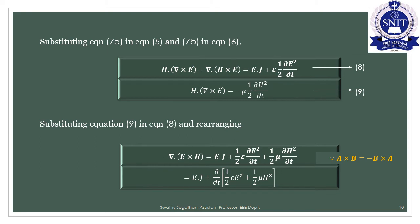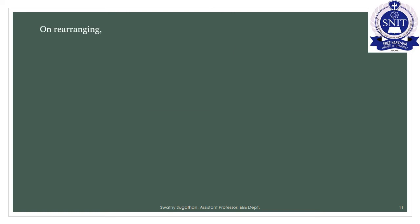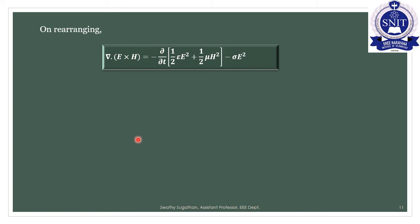Substituting and rearranging, we obtain: −del · (E cross H) = E · J + ∂/∂t(½εE² + ½μH²). Multiplying both sides by −1: del · (E cross H) = −∂/∂t(½εE² + ½μH²) − σE². Here J = σE (conduction current density) is substituted — this is equation number 10.